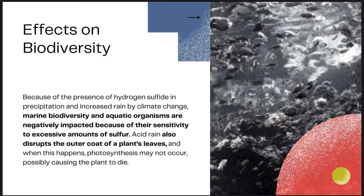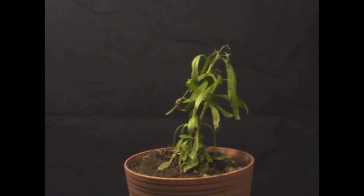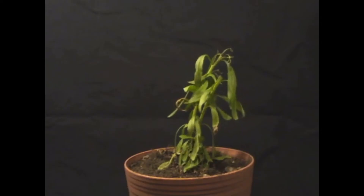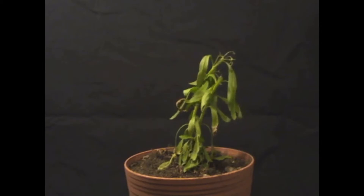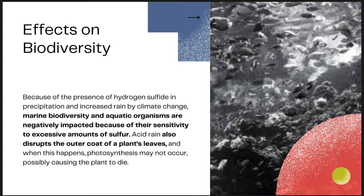Acid rain also disrupts the outer coat of a plant's leaves, and when this happens, photosynthesis may not occur, possibly causing the plant to die.